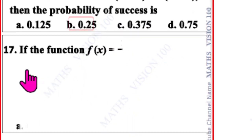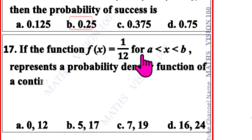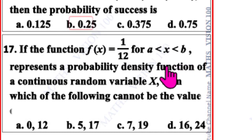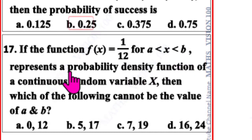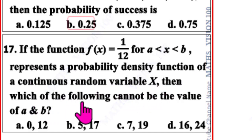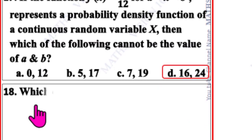Question number 17. If the function f(x) = 1/12 for a < x < b represents a probability density function of a continuous random variable x, then which of the following cannot be the value of a and b? The correct option is D: 16 comma 24.